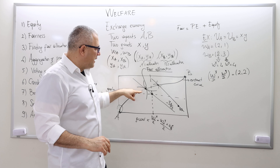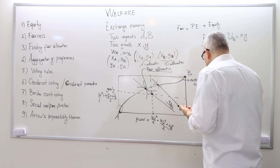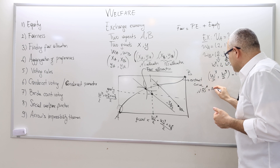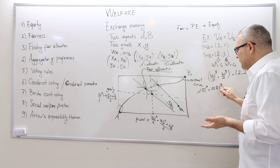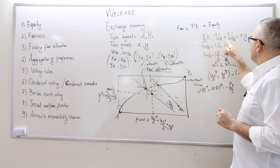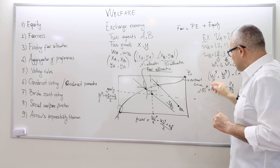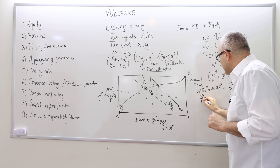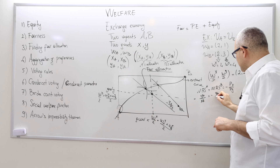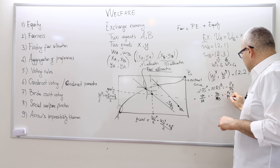Let's find this allocation. The utility maximization problem gives us the point where the marginal rate of substitution of agent A equals the marginal rate of substitution of agent B, which equals the price ratio minus PX over PY. Because the utility functions are the same — x times y — the MRS of agent A is YA divided by XA, and the MRS of agent B is YB divided by XB, and both equal the price ratio.